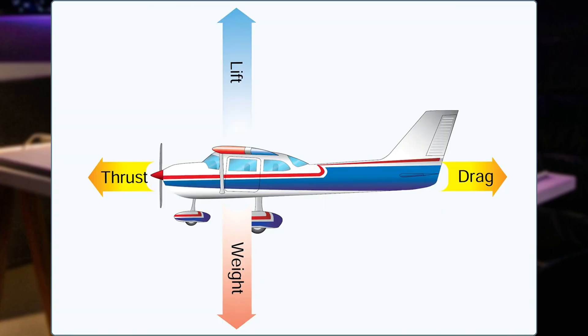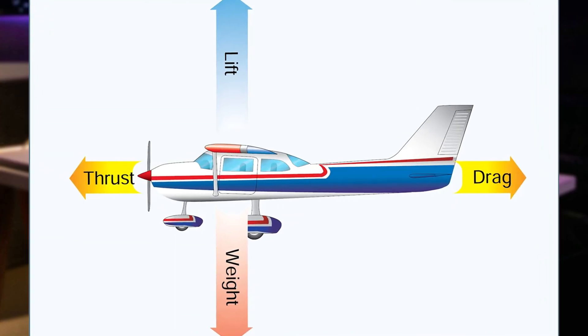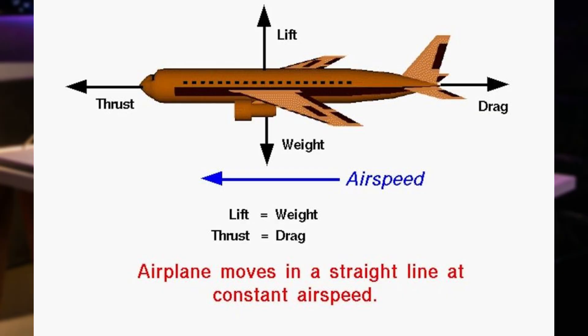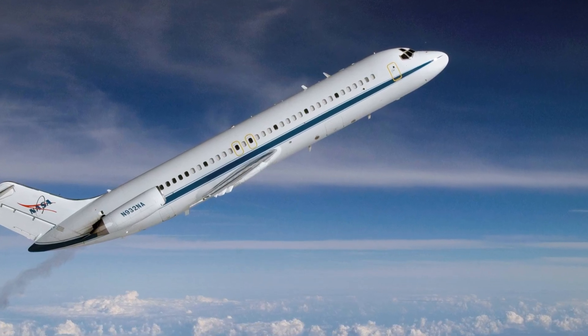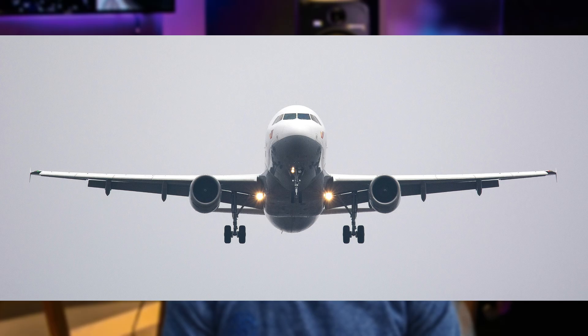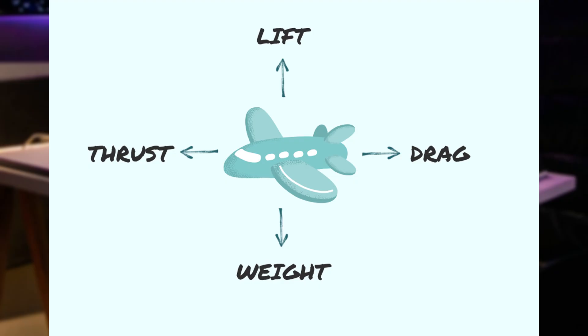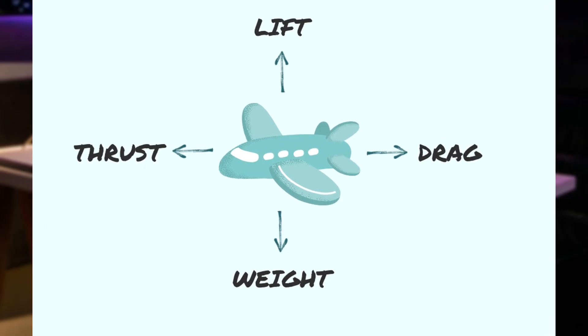Drag requires constant thrust to maintain speed. The last force is weight, or gravity — the force that pulls the plane down toward the Earth. To keep an aircraft in the air, lift must counteract weight. If lift is greater than weight, the plane climbs. If lift equals weight, the plane maintains altitude. If lift is less than weight, the plane descends. Balancing these four forces — lift, thrust, drag, and weight — is what allows an airplane to fly smoothly.